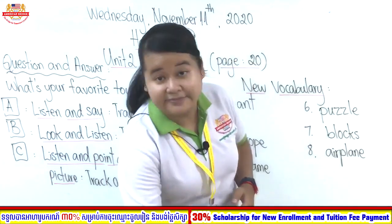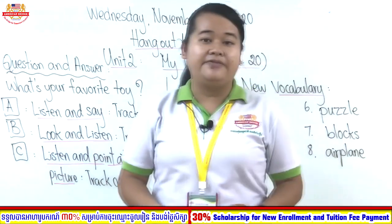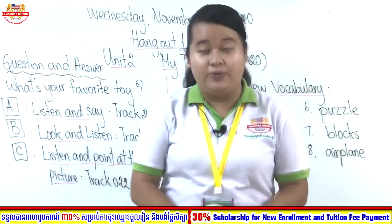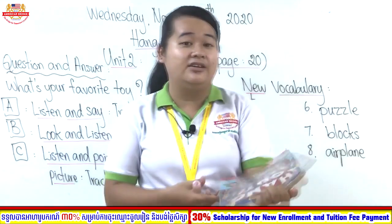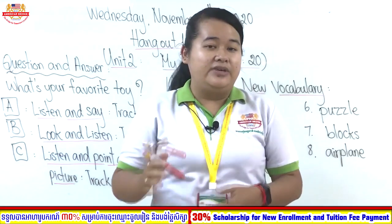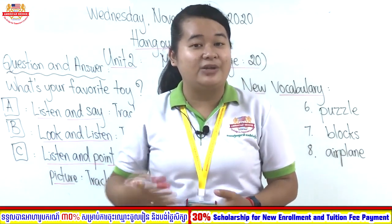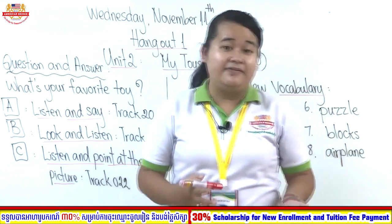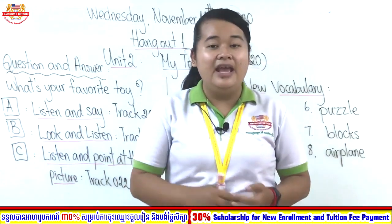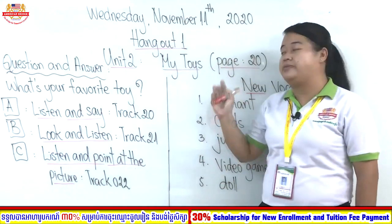Today is Wednesday, November 11, 2020. For the first session we are going to study our book, Hang Out One. Before we start our lesson, teacher wants you to review our previous lesson in Unit One, which talks about school things. In school things we have a lot of materials like ruler, pencil, notebook, or eraser. Right now let's move to Unit Two, which talks about 'My Toys.'